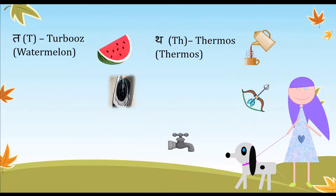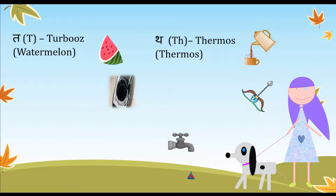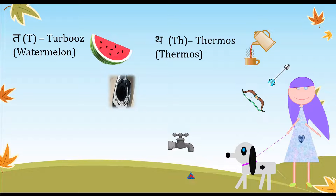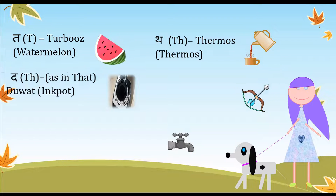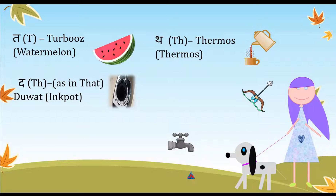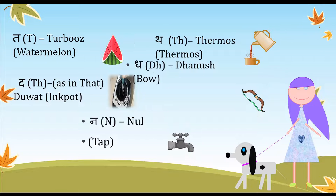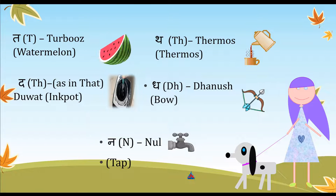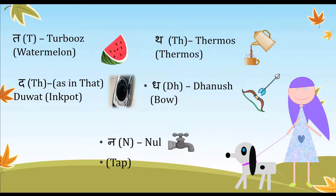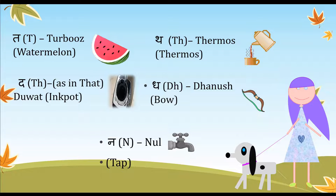Then we have 'ra' — 'tarbooch' which is watermelon, very yummy when it's hot! Next is 'tha' — 'thermos'; 'da' — 'dawat' the inkpot; and 'na' — 'dhanush' which is a bow and arrow. Then 'na' — 'nal' which is a tap, and cold water.